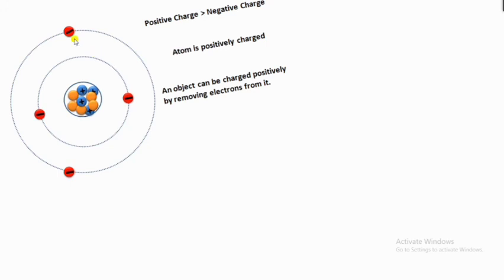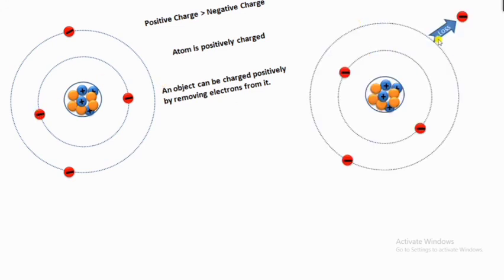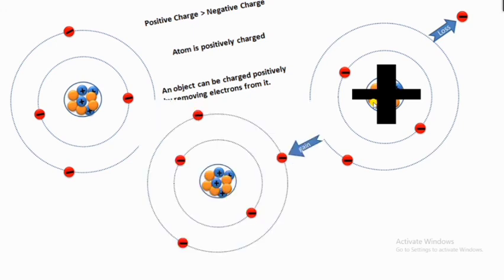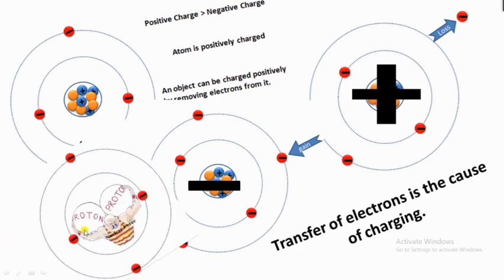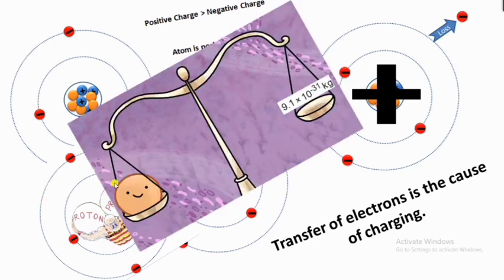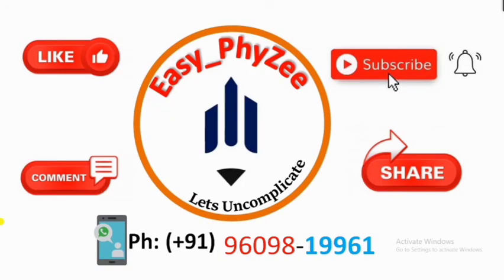In summary: in an atom there are equal numbers of negatively charged electrons and positively charged protons. When we take away an electron the atom becomes positively charged; when we give an extra electron it becomes negatively charged. The transfer of electrons is the cause of charging. We can charge an object by adding or removing electrons, but we cannot add or remove protons because they are held by strong nuclear force. Since electrons have mass, charging changes the mass of an object — negative charging increases mass, positive charging decreases mass.